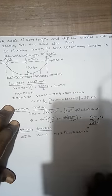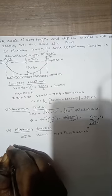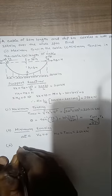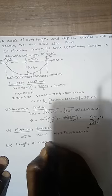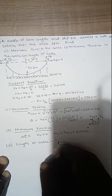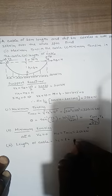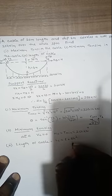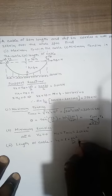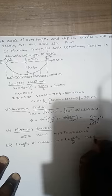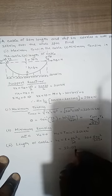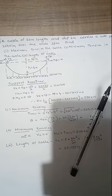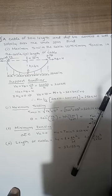The length of the cable is given by: L_cable = L + (8 × H²)/(3L) = 20 + (8 × 4²)/(3 × 20) = 20.133 m. This is the solution for Problem 2.